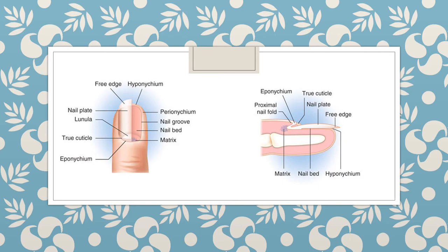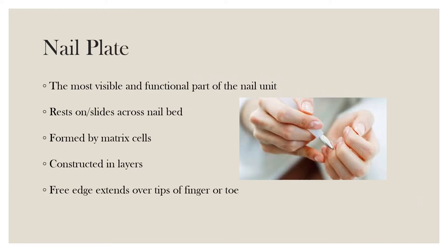First up is the nail plate. The nail plate is the hardened keratin plate that sits on and covers the nail bed. It is the most visible and functional part of the nail unit. The nail plate is relatively porous and will allow water to pass through it much more easily than through normal skin of equal thickness.